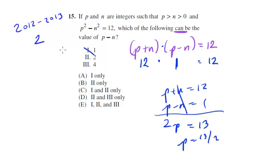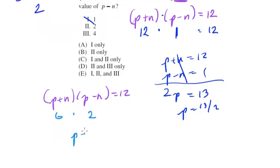How about 2? Well, again, if (p+n)(p-n) equals 12, and if we know that p minus n equals 2, this would have to equal 6. Now, does that make sense? Let's go ahead and solve that. p plus n equals 6, p minus n equals 2.